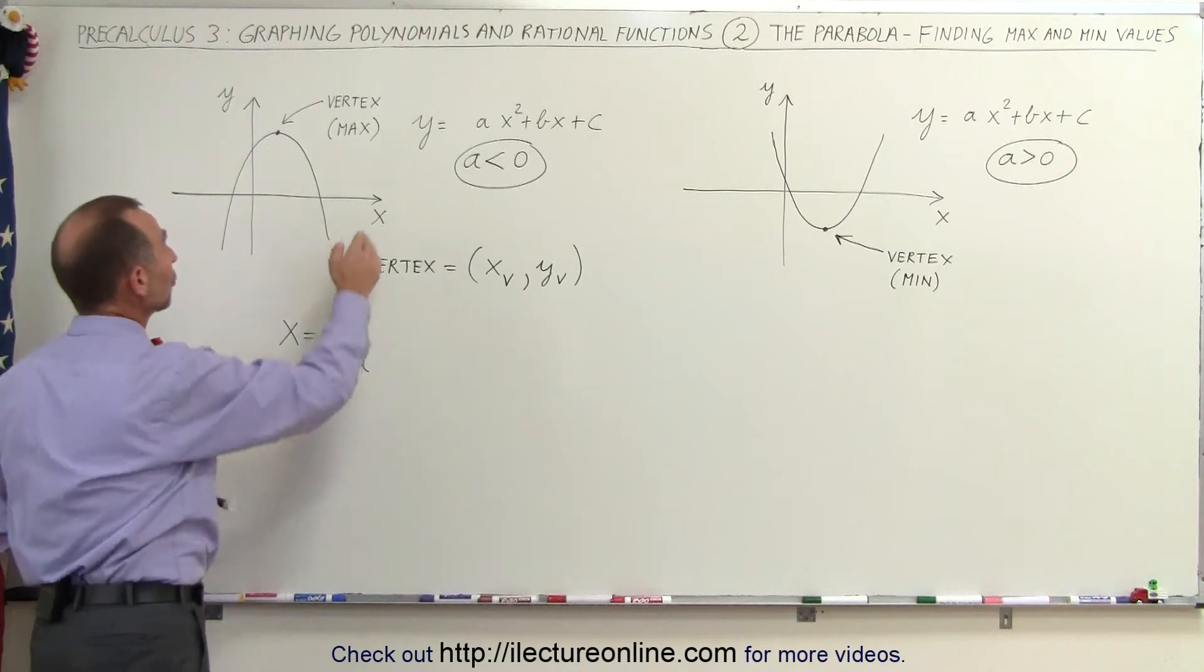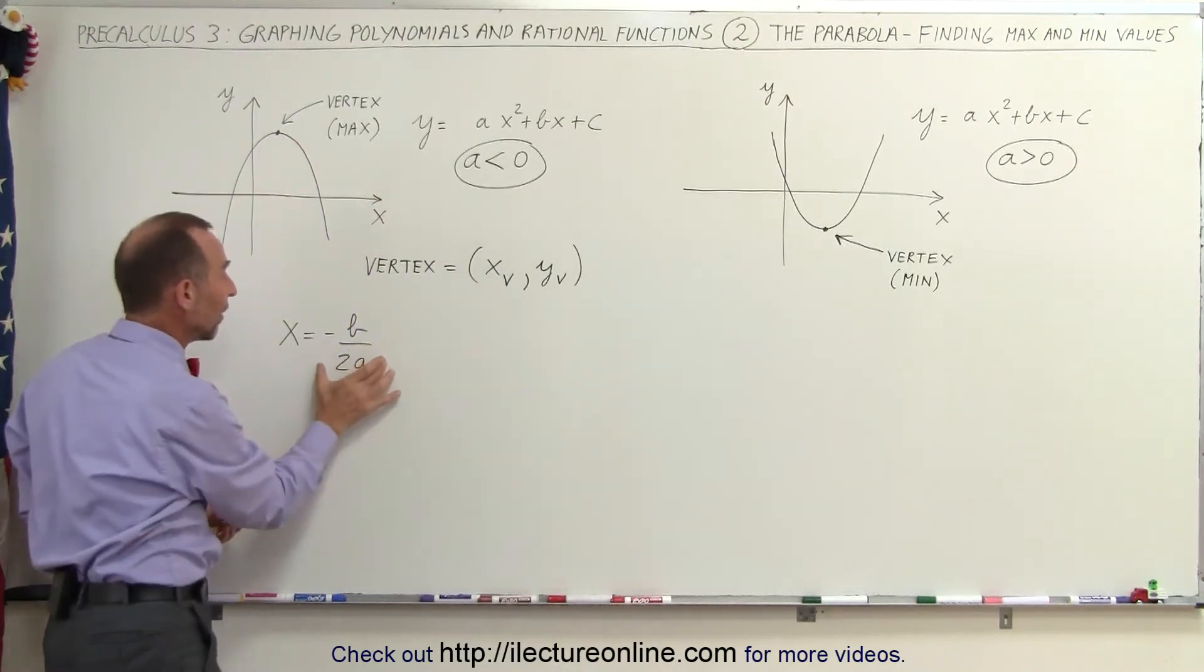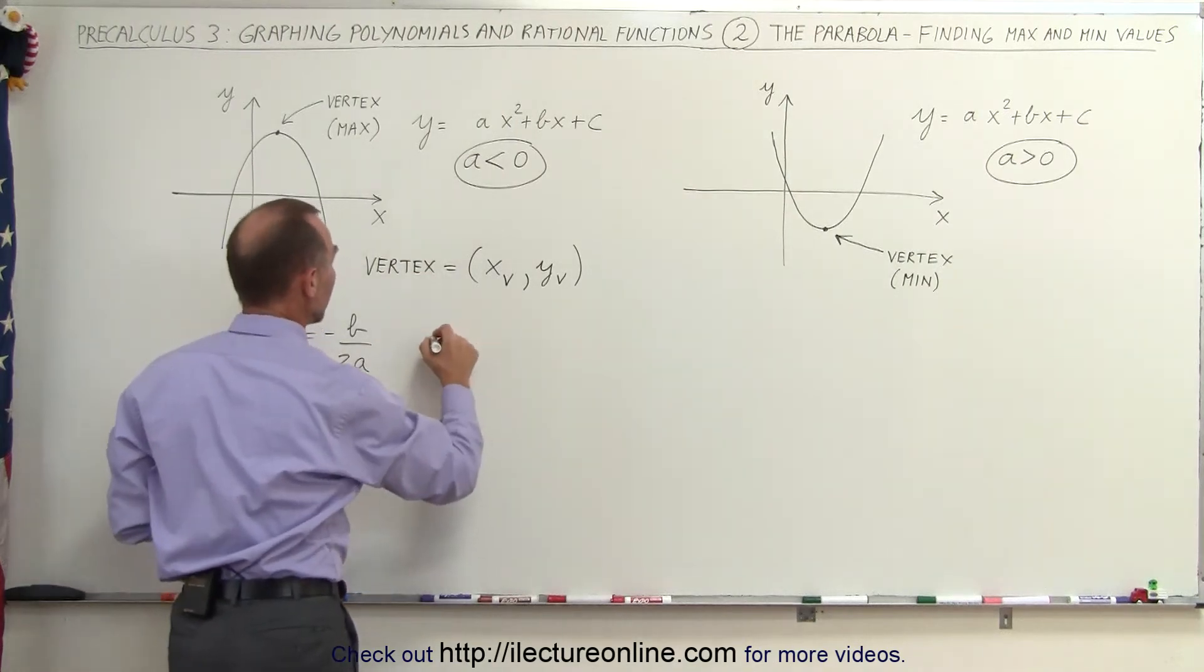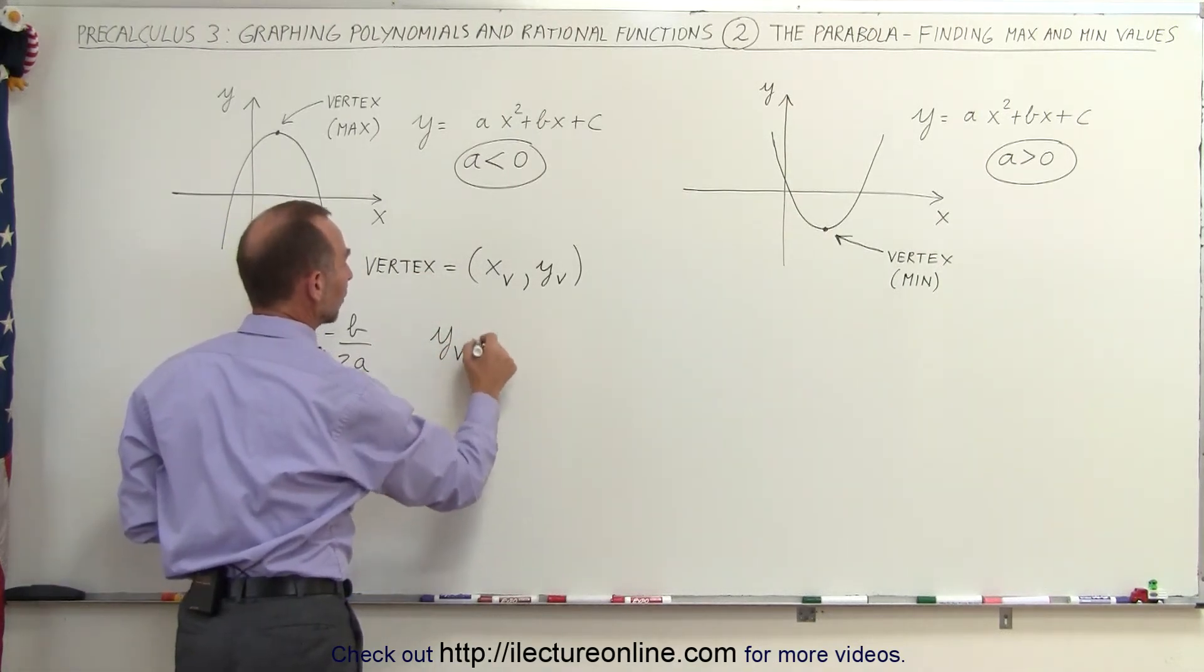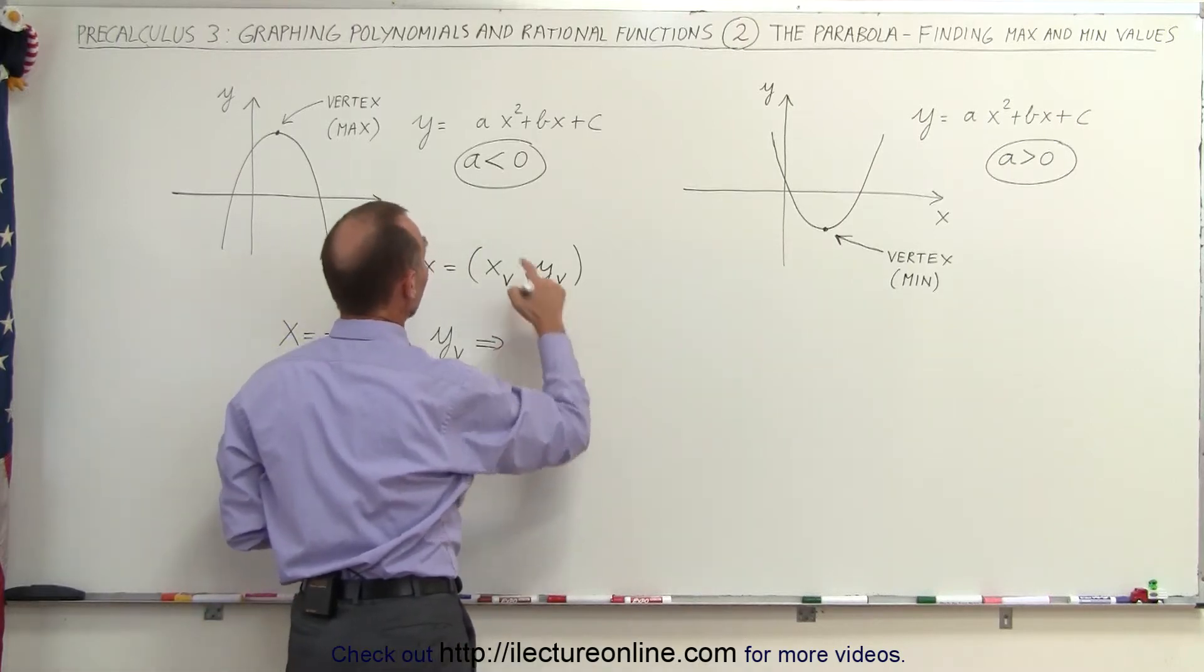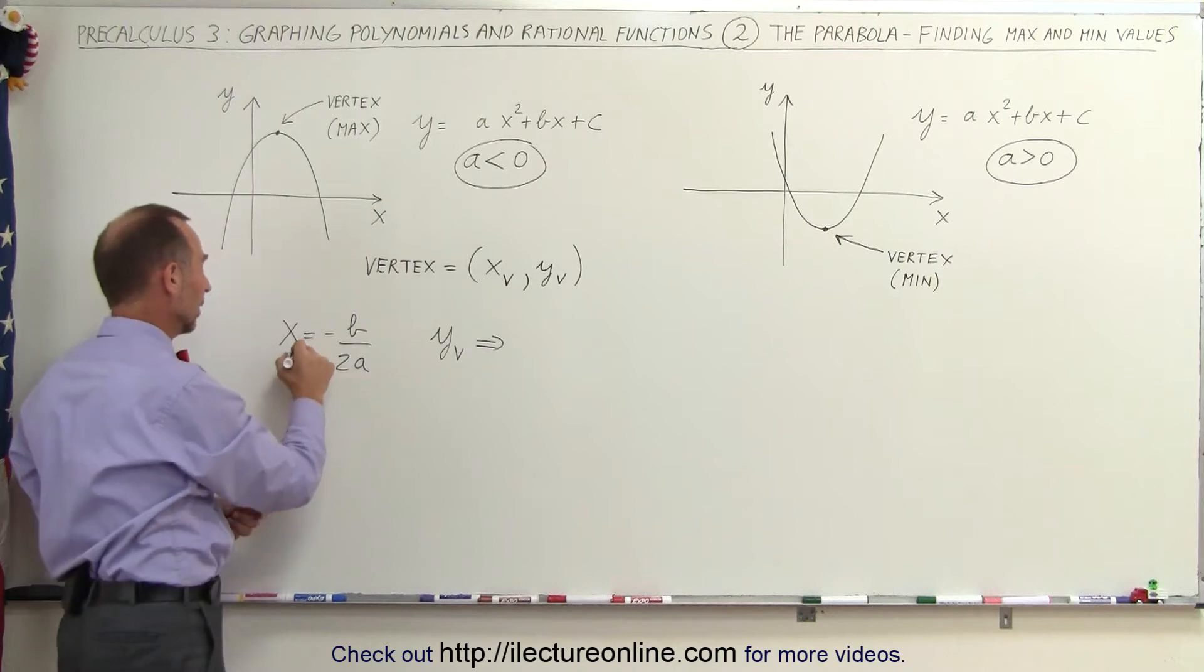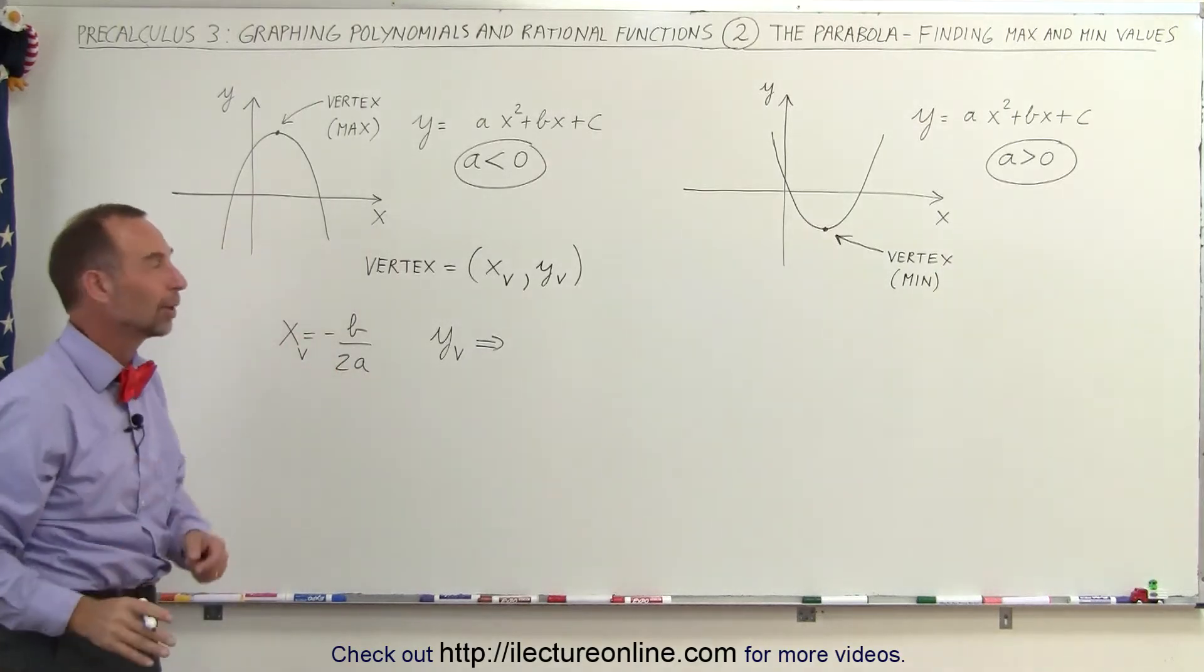Now to find a corresponding y-value of that point, all we have to do is take this value and plug it into our original function. So to find the y-coordinate of the vertex, we can then set every x in the equation equal to the value that we found for the x-coordinate, and I should say x of v there because that's really what it is.